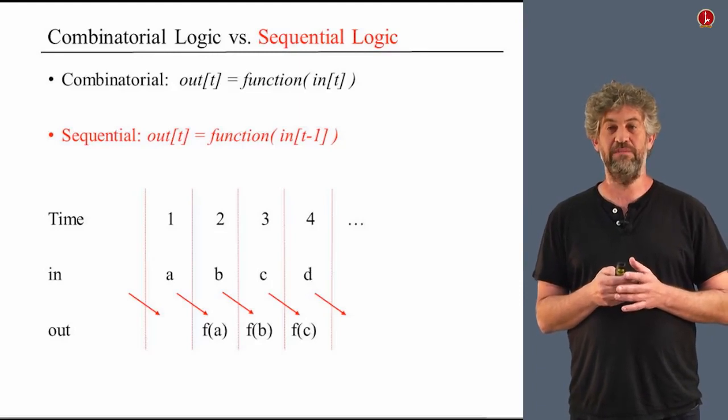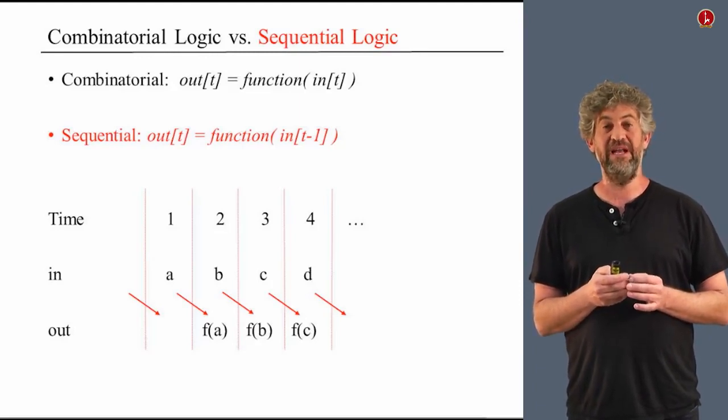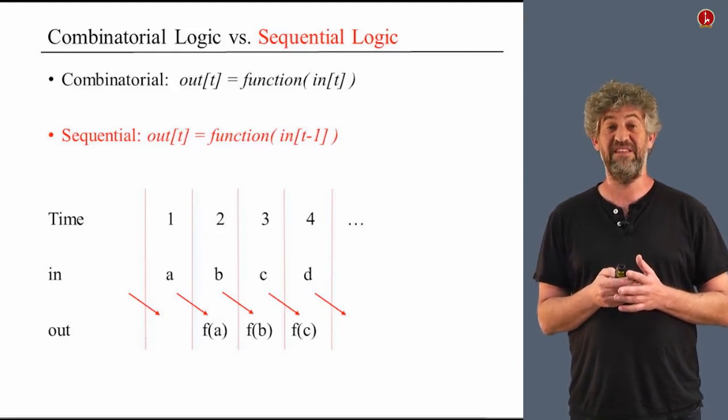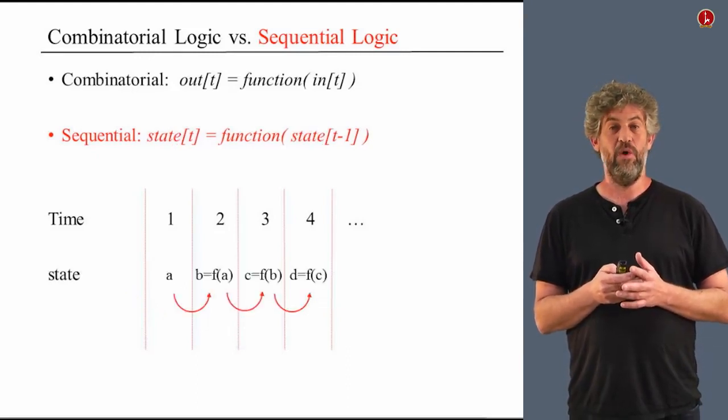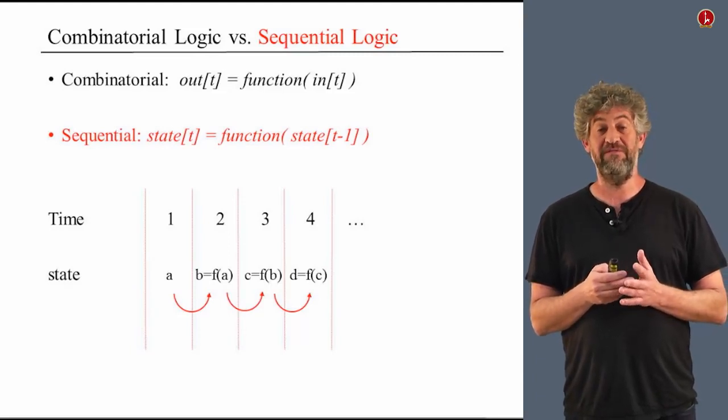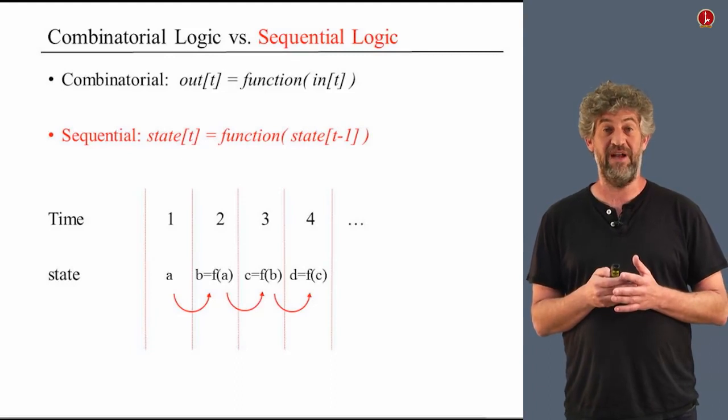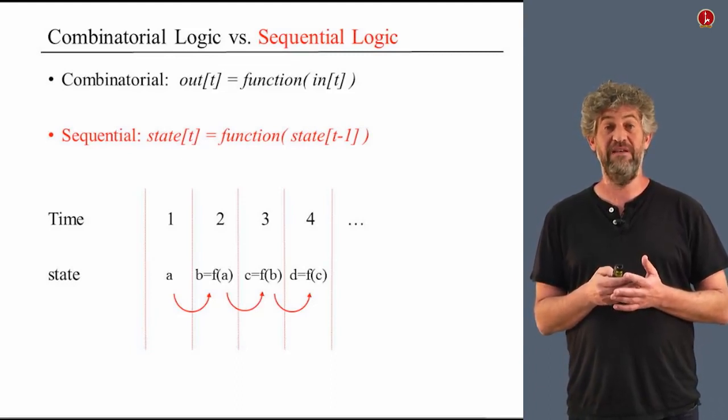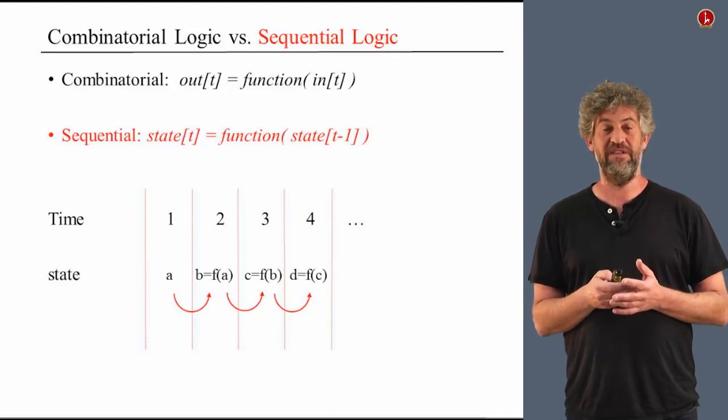Once we have this point of view, we can do a really interesting thing. We can actually have the input and the output be the same bits, the same busses, the same locations in our hardware. And we can now call it state. As long as our value at time t depends on the previous value at time t minus one, we can have these values live in the same wires in the circuit.